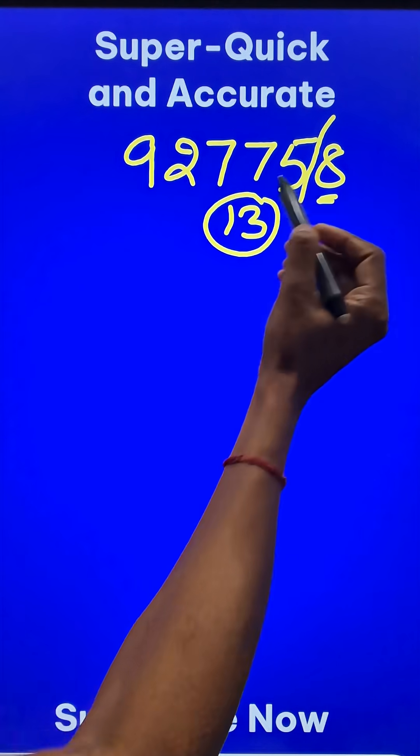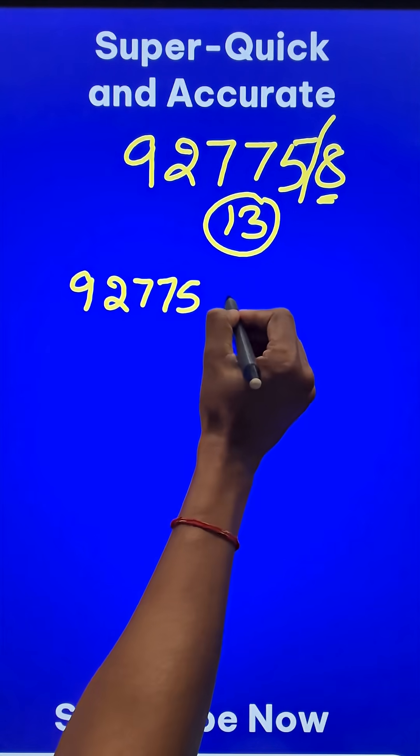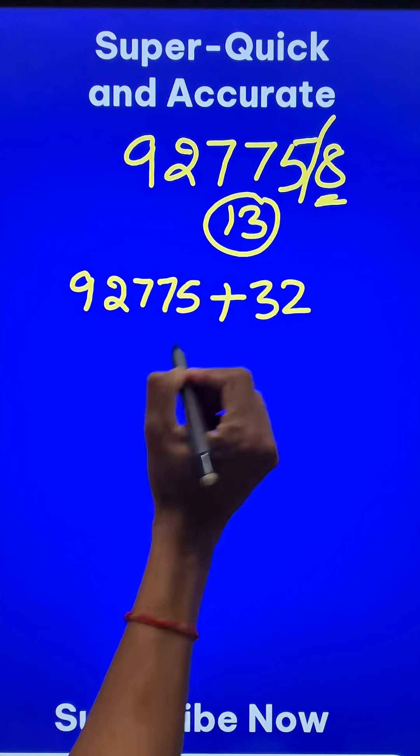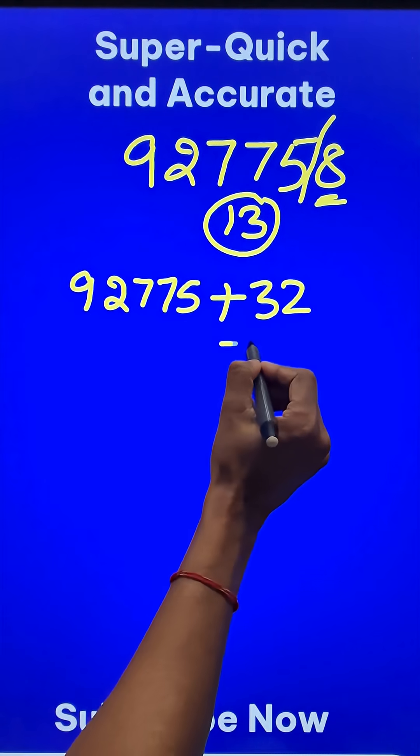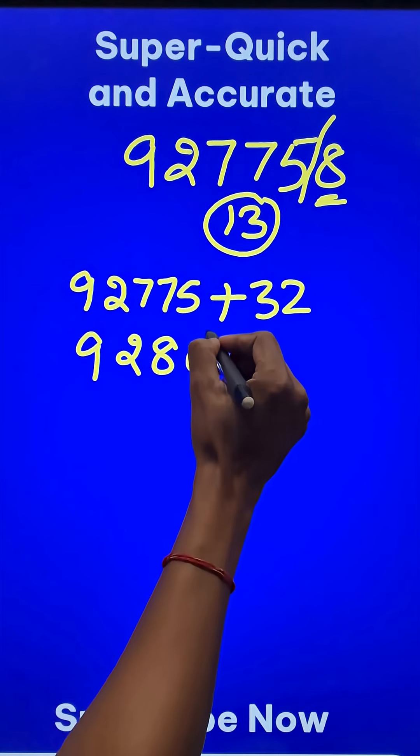Separate out the last digit, 8, and write the remaining number 92775. Then add 4 times the last digit, 8 times 4 is 32. So what do you get here? This will be 7, and then 10 means 0, and a 1 carry means 8, and then 2 and 9. Now carry on doing this.